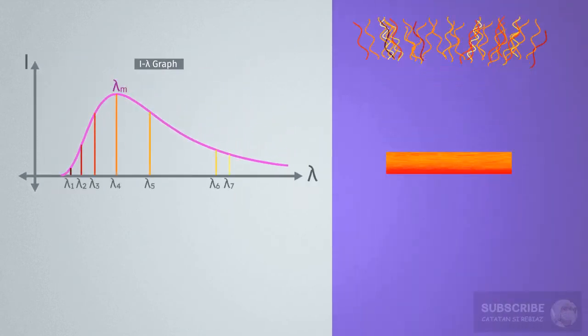Well, this wavelength lambda M is what is seen as the color of the surface, because the wavelength lambda M emitted the most compared to other wavelengths.